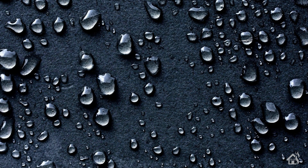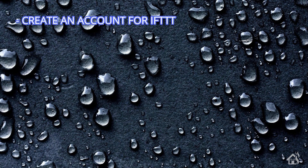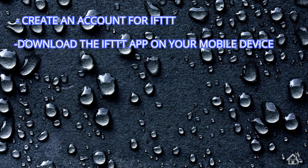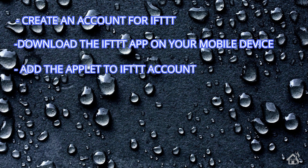Just to do a quick run through everything we're going to cover in this video: we're going to start by going over the steps you'll need to basically make all this work. You'll need to create an account for IFTTT if you don't already have one. Then you're going to need the IFTTT app on your mobile device to get those notifications. Next, we'll add the applet to our IFTTT account. And lastly, I'll show you what those notifications or alerts look like on my mobile phone.